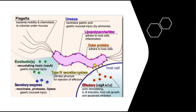Helicobacter pylori organisms have adapted to the ecological niche provided by gastric mucus. Four features are linked to H. pylori virulence: flagella, which allow the bacteria to be motile in viscous mucus; urease, which generates ammonia from endogenous urea, elevating local gastric pH and protecting bacteria from the acidic stomach; adhesins, which enhance bacterial adherence to surface foveolar cells; and toxins such as that encoded by cytotoxin-associated gene A (CagA) that may be involved in ulcer and cancer development. These factors allow H. pylori to create an imbalance between gastroduodenal mucosal defenses and damaging forces.